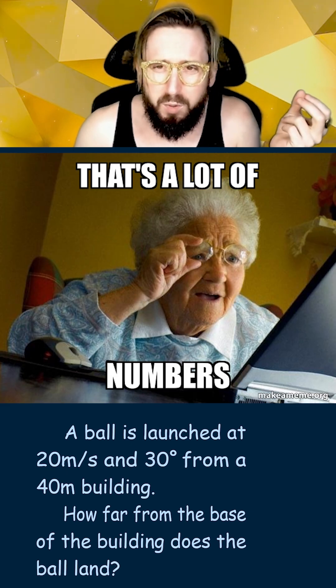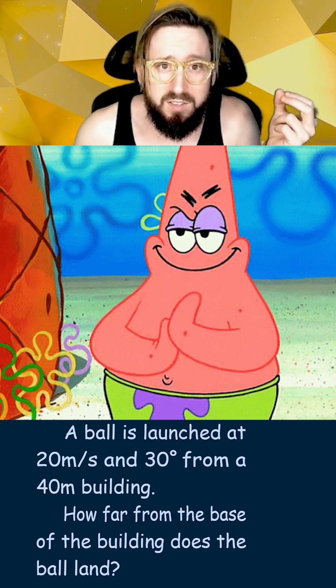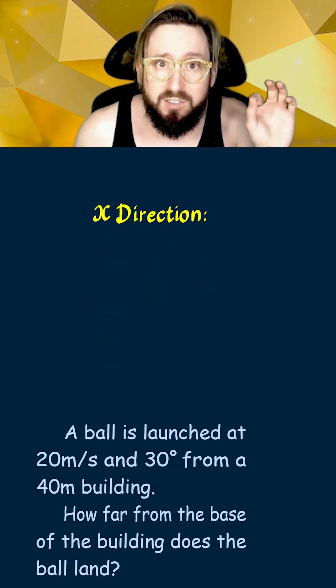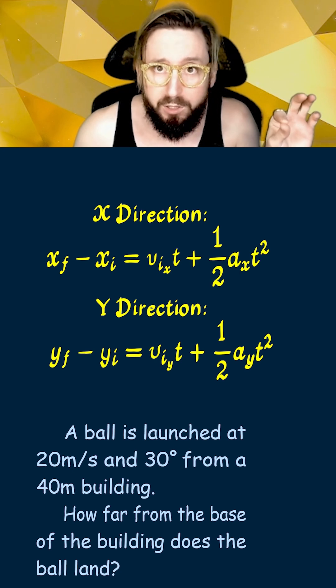Now I know there are a lot of numbers in this problem, but here's a general strategy to make it easy. Any time you have an object moving in both the up-down and the left-right direction, the key is to write out the kinematics equations separately for each direction.